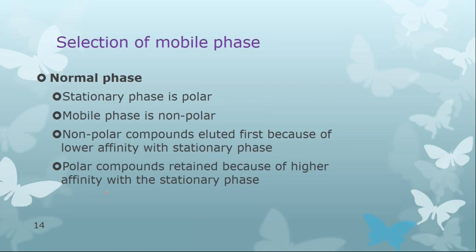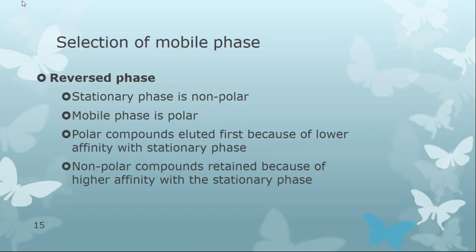In reverse phase, this is the opposite. The stationary phase is non-polar, so non-polar compounds are retained due to higher affinity with the stationary phase and elute more slowly. The mobile phase is polar, so polar compounds have greater solubility in the mobile phase and are eluted first due to lower affinity with the stationary phase and higher affinity with the mobile phase.